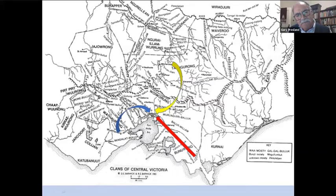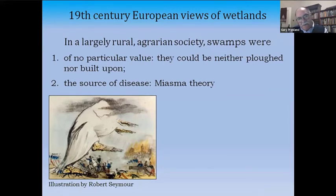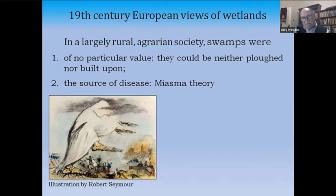Europeans, however, had a completely different view of swamps. In a largely agricultural society, swamps were of no particular value because they couldn't be ploughed or built upon. Moreover, up until close to the end of the 19th century, wetlands were thought of as sources of disease. The word 'malaria,' for example, comes from the Italian for 'bad air' — it was thought that the air coming from wetlands caused disease.